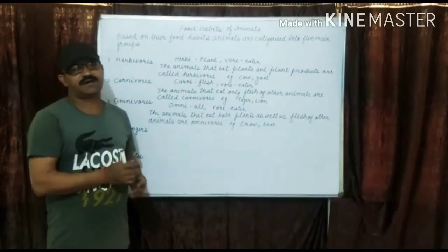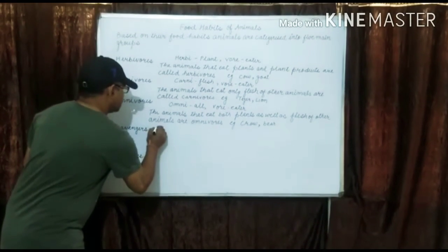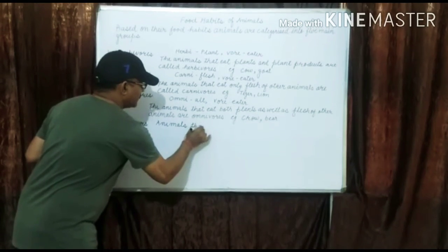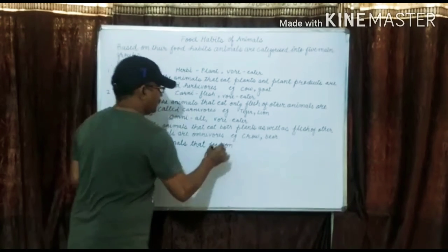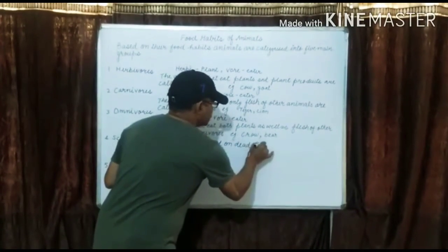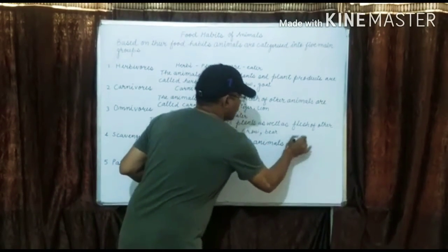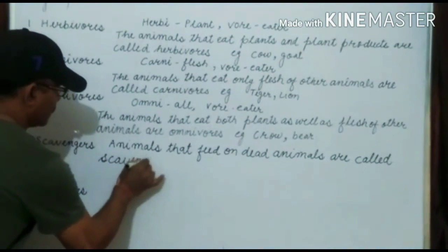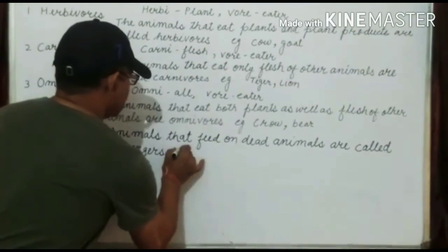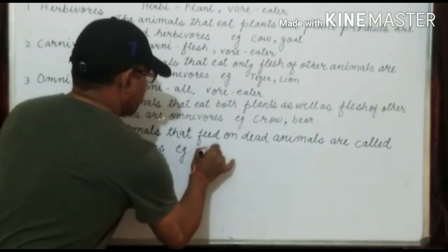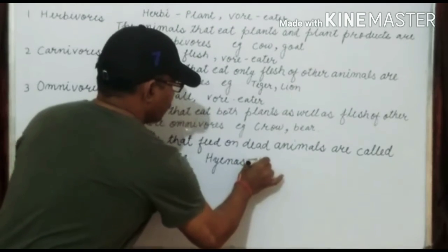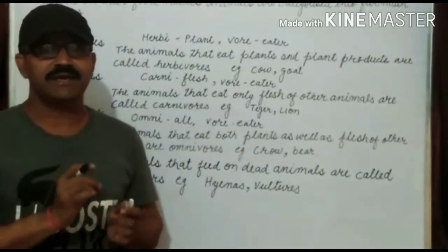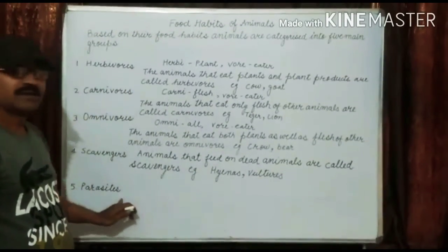Animals that feed upon dead animals are called scavengers. The definition of scavengers: animals that feed on dead animals are called scavengers. Examples of scavengers are hyena, vulture, and eagles. Scavengers do not hunt animals but eat animals that are already dead.